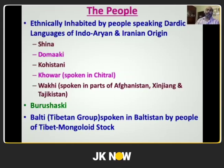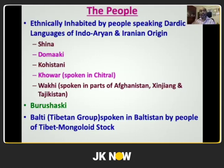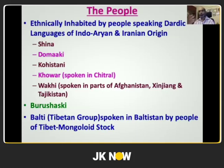Gilgit-Baltistan traditionally was not one territory — there were two parts: Dardistan and Baltistan. Dardic people are mentioned in the Mahabharata. They speak Dardic languages of Indo-Aryan and Iranian origin — Shina, Domaki, Kohistani, Khowar, and Wakhi — languages hardly spoken anywhere else in Pakistan. They also have Burushaski, a language isolate with no related languages, spoken in Hunza and Yasin Valley. People in Baltistan are Mongoloids and speak Balti, similar to what is spoken in Kargil or Leh — a language of the Tibetan group.